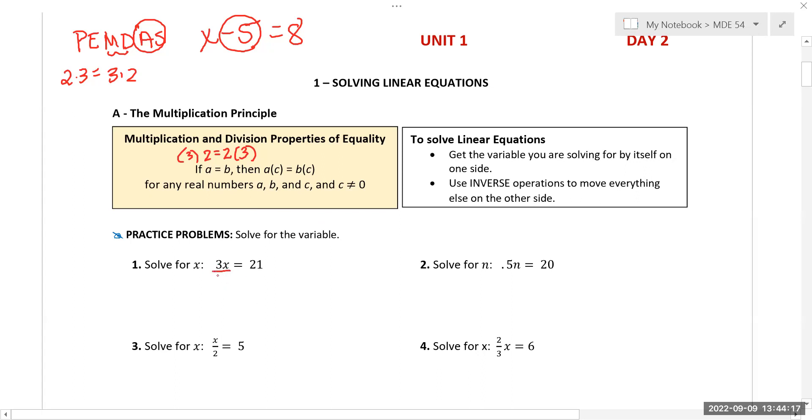If I'm multiplying by three, I can divide by three. Multiplication and division undo each other. If I do it to one side, I have to do it to the other, and that's how I get x equals seven. For linear equations, you have to get the variable you're solving for by itself. If it's on both sides, put it on one side using inverse operations. For number two, you're multiplying by 0.5, so you divide by 0.5. It's okay that it's a decimal, and that gives you n equals 40.